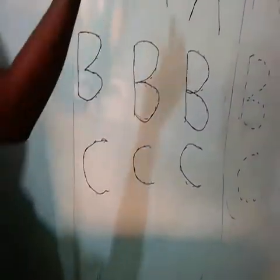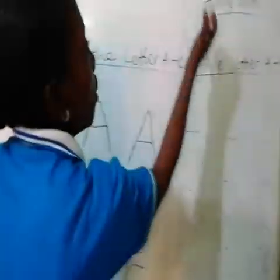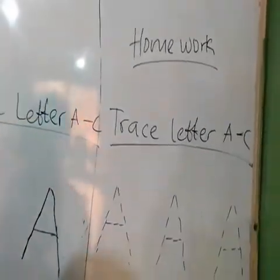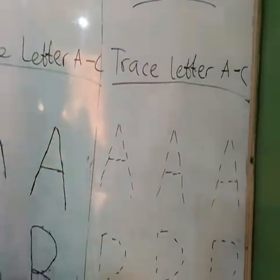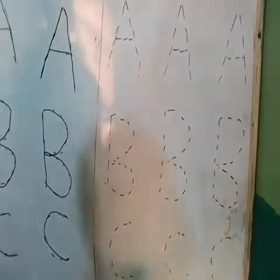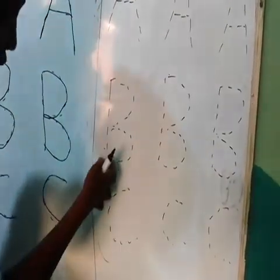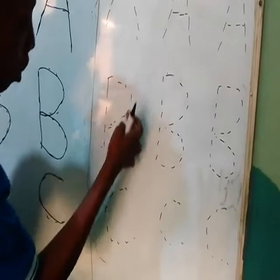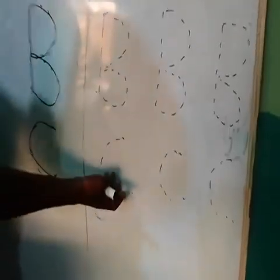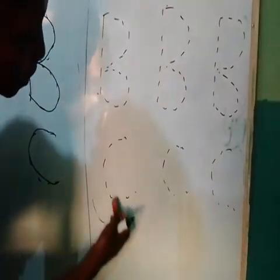So this is how you can write your letter A to C. Here is your homework. Trace letter A to C. This is letter A — you have to stroke this one, stroke it down, stroke it down, then put dash, make it letter A. Then this is letter B — you stroke this one down, then cough, cough, make it letter B. And this is letter C — you have to cough it. This one is very simple, cough it like this.